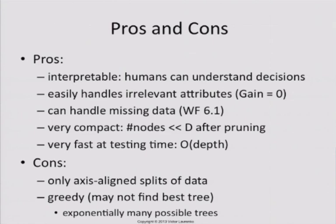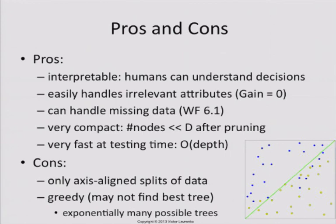So what are the disadvantages? When dealing with numeric data, decision trees can only do axis-aligned splits. They cannot do oblique splits of the data. So if you have a data set and you're trying to separate the blue from the yellow, other algorithms like regression can draw a diagonal boundary with a single stroke to separate one class from another. Decision trees cannot do that.